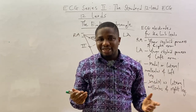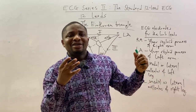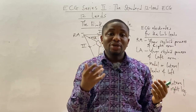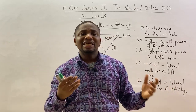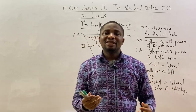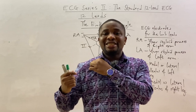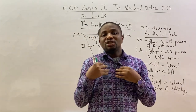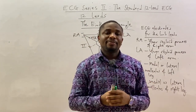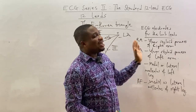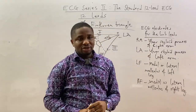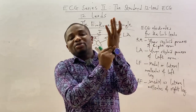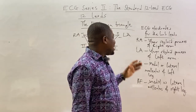Conventionally, the right arm electrode should be closer to the heart — in some ECGs it is placed on the right shoulder. The left arm electrode is placed at the ulnar styloid process of the left arm.